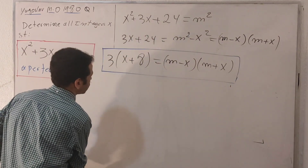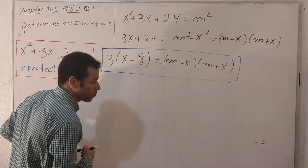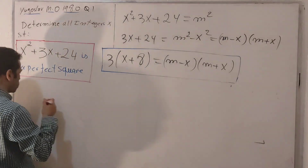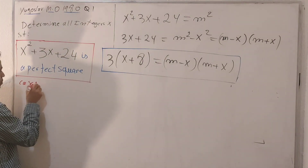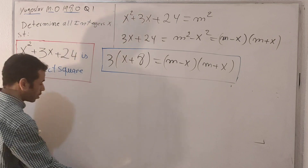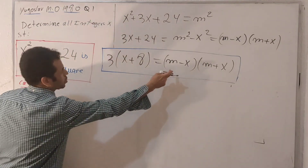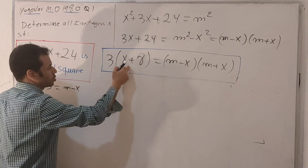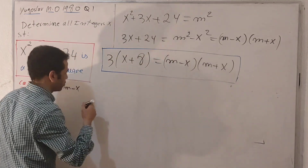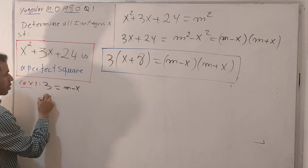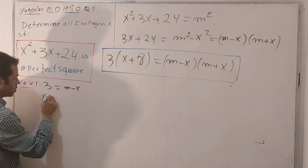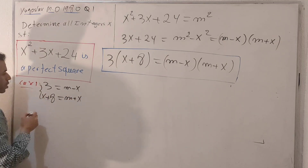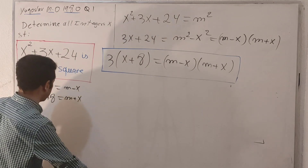Now I'm going to solve this equation by dividing into many cases. For case number one, we assign 3 equals (m minus x), and then (x + 8) must take the other term, which is (m plus x). So we get x + 8 = m + x. This is the first possibility.